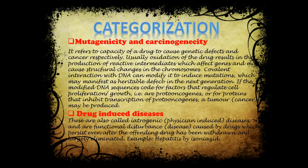Next comes drug-induced diseases, the last category in this topic on adverse drug reactions. These are also known as iatrogenic diseases — functional disturbances or diseases caused by drugs which persist even after the drug has been withdrawn and largely eliminated. Certain adverse effects remain even after the drug is stopped and are not completely eliminated. For example, isoniazid may cause hepatitis, which can be permanent.